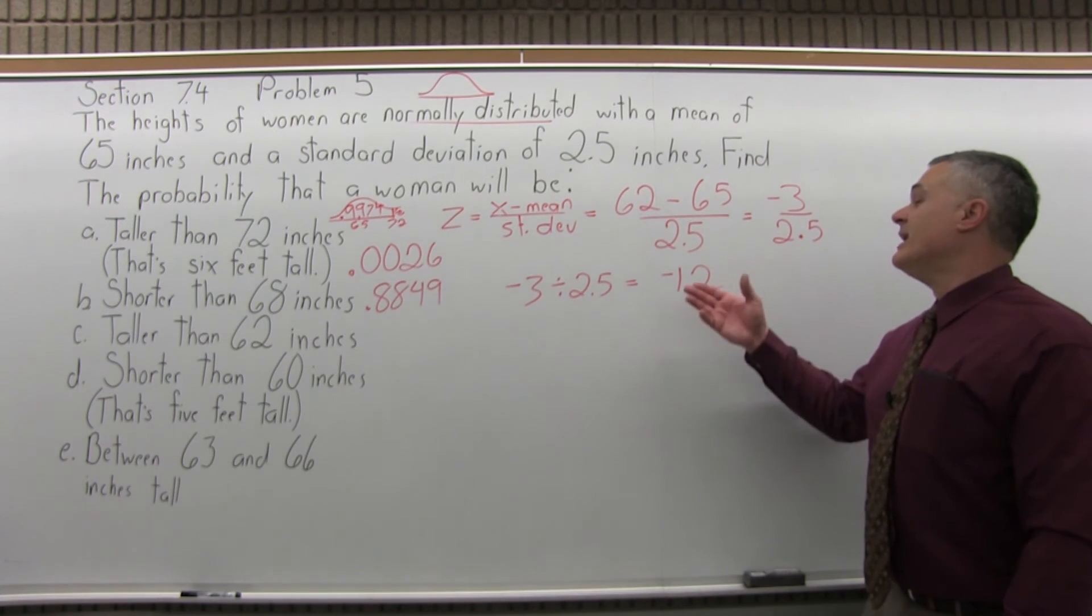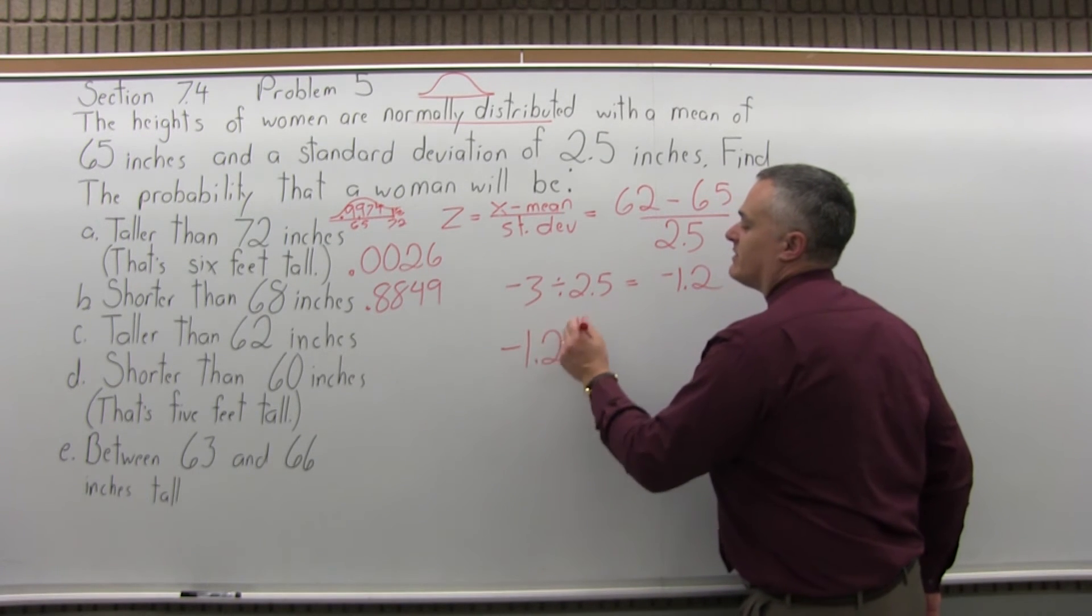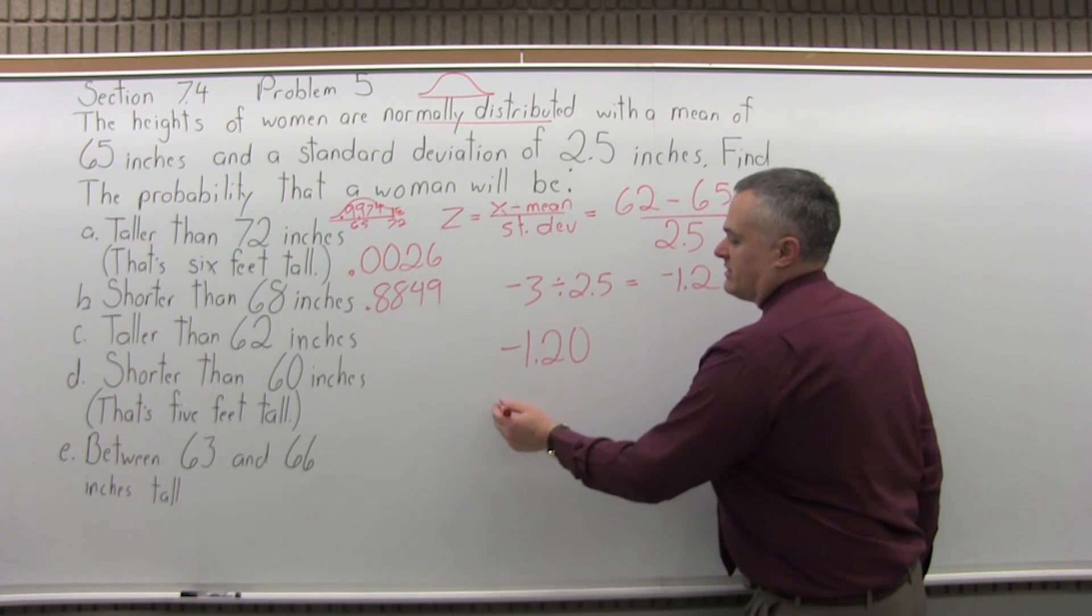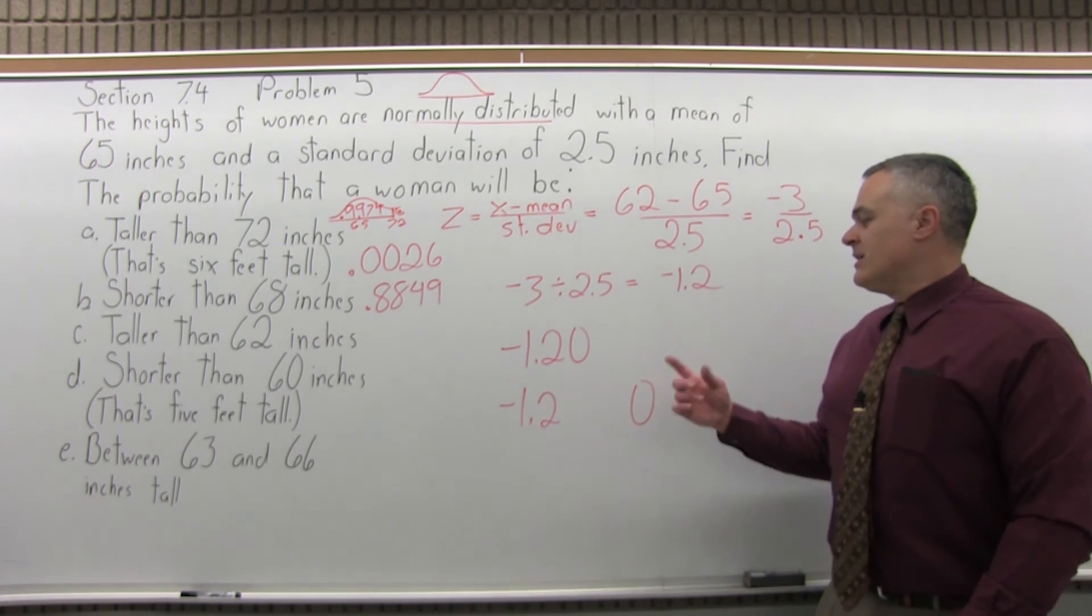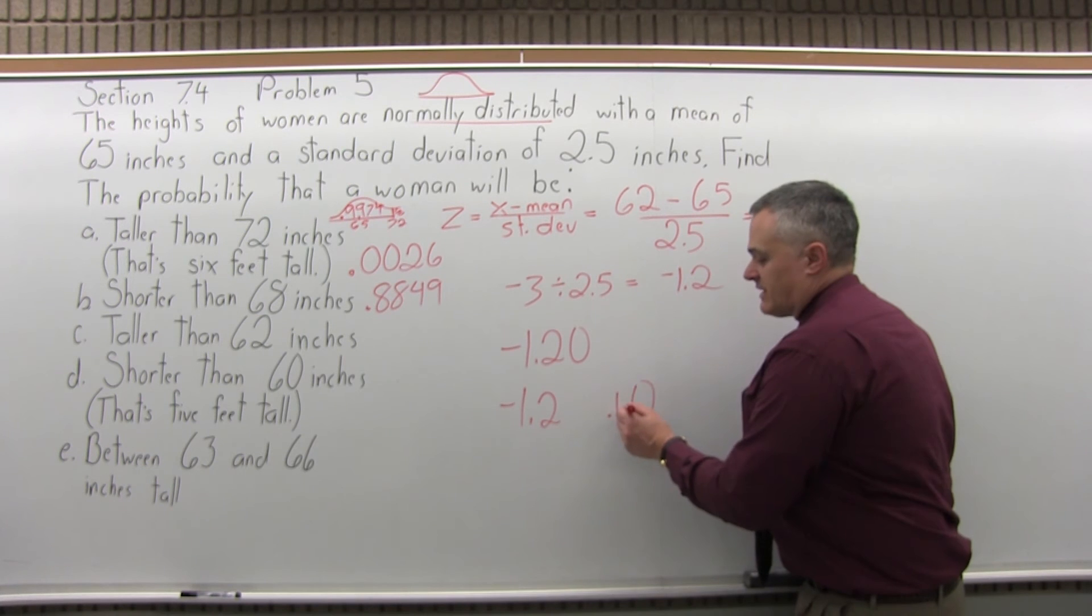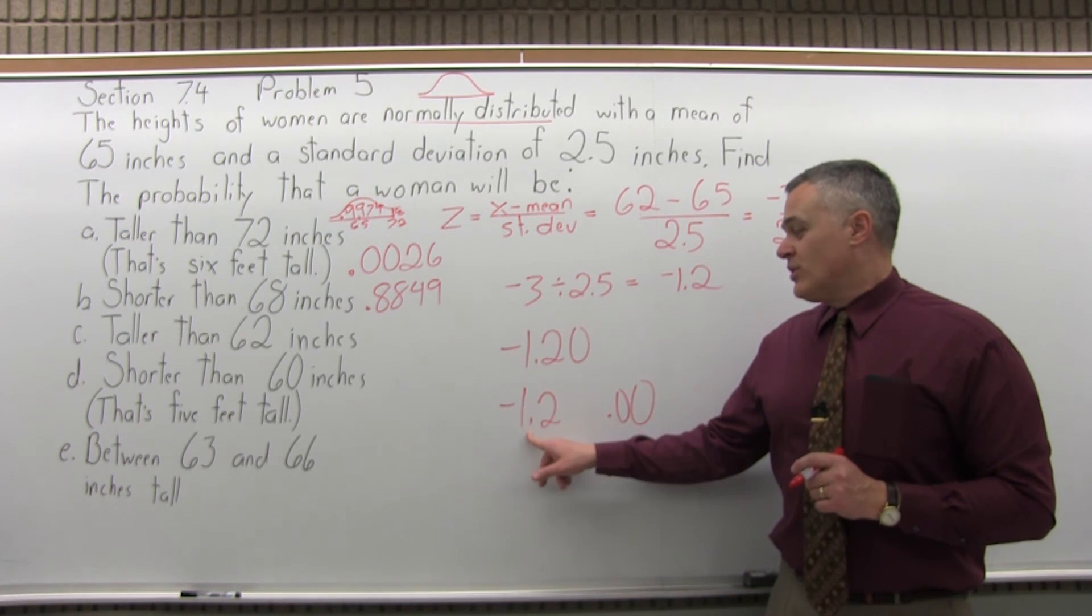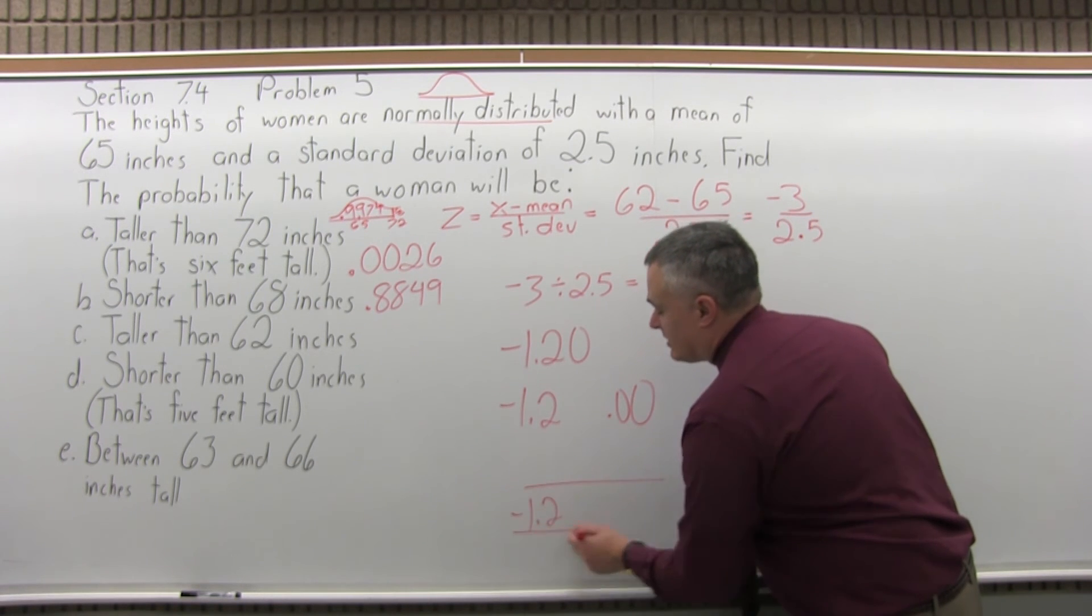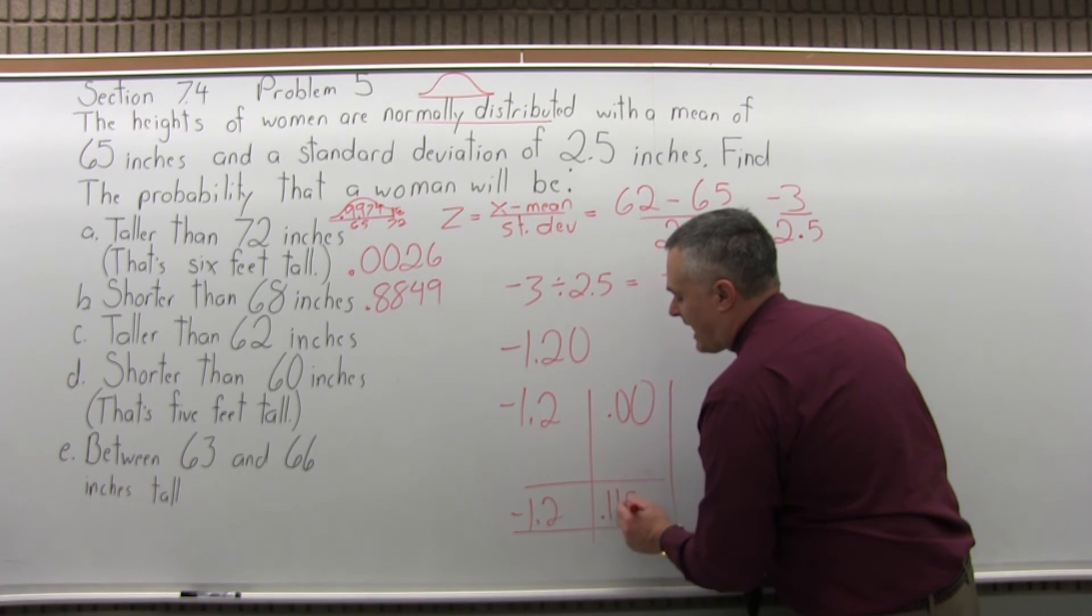So, very similar. Now, negative 1.2 is what I want to look up. Write it as negative 1.20. Split that into two parts, negative 1.2 and zero. Put a .00 in front of the rightmost digit. Now, you're going to a completely different part of the chart. When you look up negative 1.2 now, that's a different row than positive 1.2. You see where the negative 1.2 row intersects with the .00 column and it's going to be .1151. Very different answer.